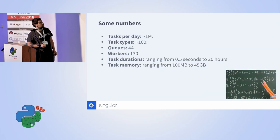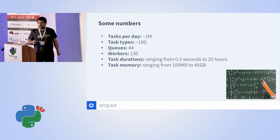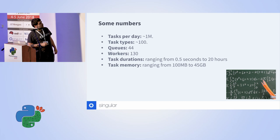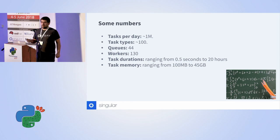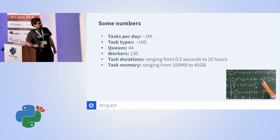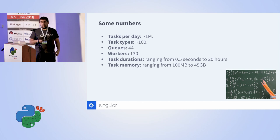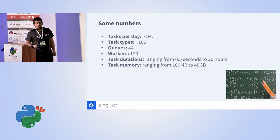Some numbers: the number of tasks we run per day is not huge but it's significant — around 1 million tasks per day. We have about 100 task types, 44 queues, and around 130 workers. One of the more interesting things is that tasks are rather unpredictable — they can take less than a second or they can take 20 hours, especially because we depend on third parties that can sometimes be slow to pull data from. The same goes with memory: pulling granular data from Facebook or AdWords can contain a lot more data than a relatively small integration.